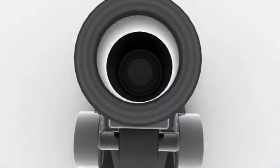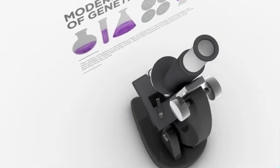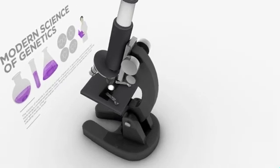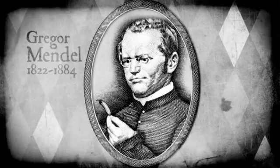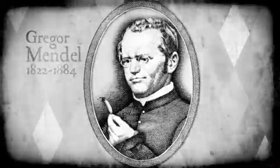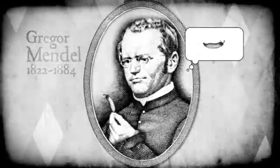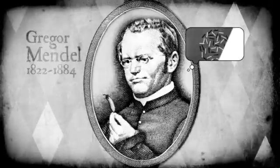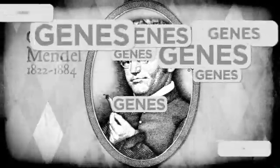The modern science of genetics seeks to understand the process of inheritance, which began with the work of Gregor Mendel in the mid-19th century. Although he did not know the physical basis for heredity, Mendel observed that organisms inherit traits via discrete units of inheritance, which are now called genes.